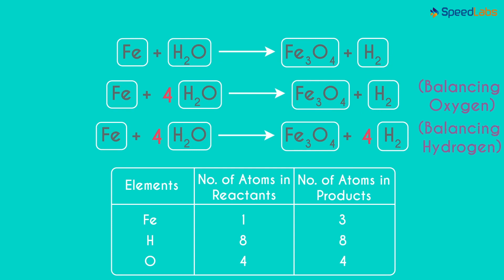Is the equation balanced now? The number of Oxygen atoms on each side is 4 and the number of Hydrogen atoms on each side is 8. And what about Iron atoms? It's 1 on the left and 3 on the right. So the equation is just partly balanced.